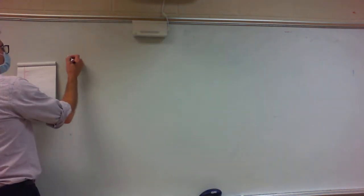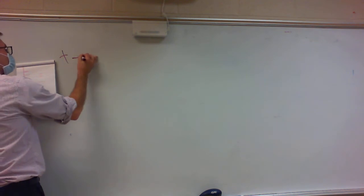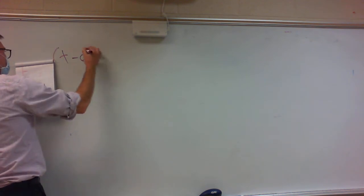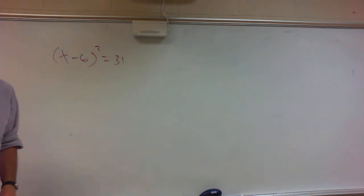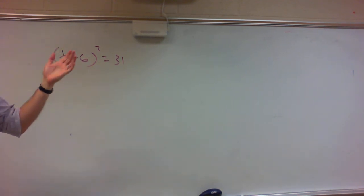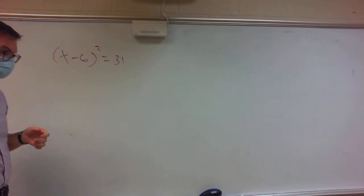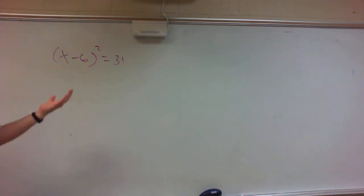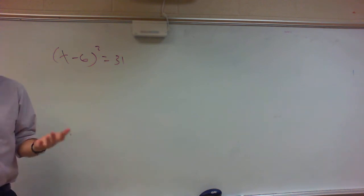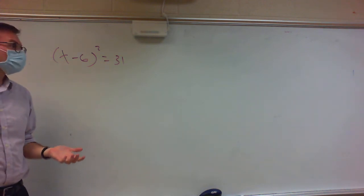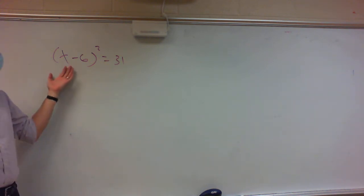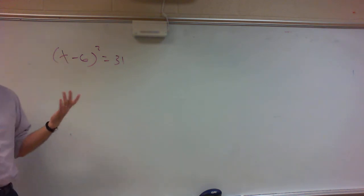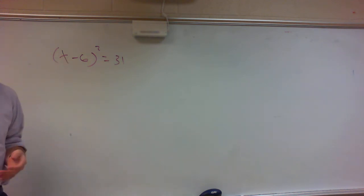If I give you x minus 6 squared equals 31, we need to talk about solving this equation. When you solve equations, your job is to get x by itself. I've got a single x term, so I need to get x by itself.